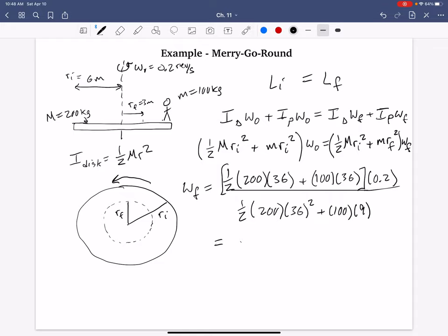0.32, 0.32 revolutions per second for the final angular speed. And note that that value increased from what was initially. It increased by like 50% at least. So it sped up. Why did it speed up?